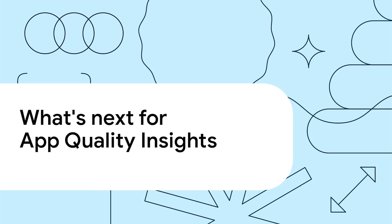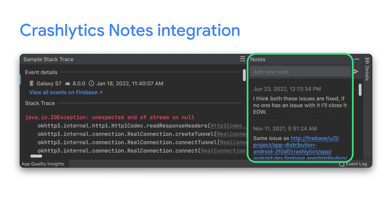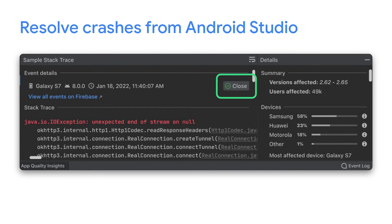While this build of Android Studio is graduating to stable, our team is already working on building the next version of App Quality Insights. We are making it easier for you to collaborate with your team when squashing bugs. With Notes, you can keep your team updated with the latest status of your bug fix. And when you are done, let your team know by closing the issue right from Android Studio.